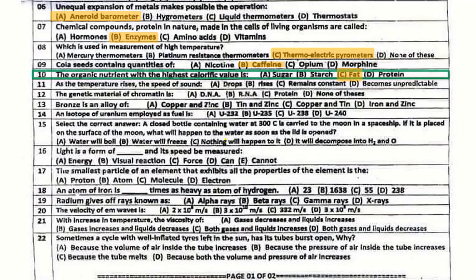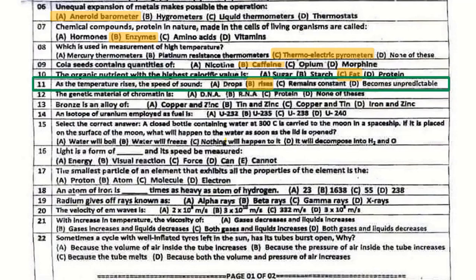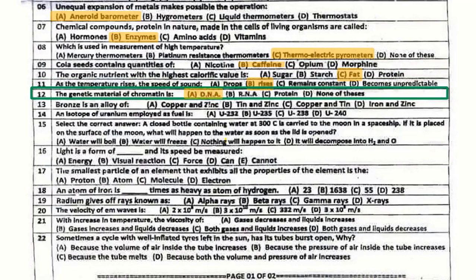Question number 11: As the temperature rises, the speed of sound — does it increase, decrease, or remain constant? The correct answer is rises. When the temperature increases, the speed of sound also increases. Question number 12: The genetic material of chromatin is DNA.